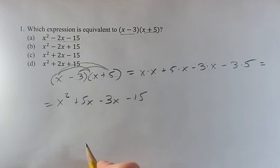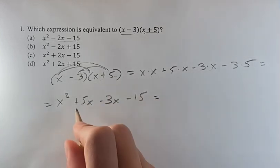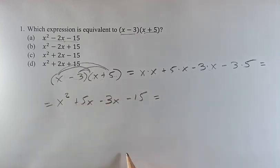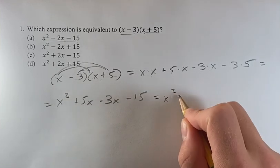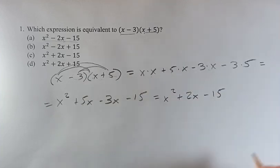And all that's left to do is combine like terms. So that's going to be these two terms, they're both x's. It's going to be 5x minus 3x. 5 minus 3 is 2. So you have x squared plus 2x minus 15.